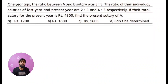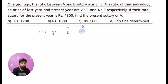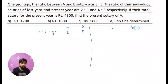This is one of the wonderful problems where they are trying to combine three ratios in a very beautiful way. For the last year, the salary of A and B are in the ratio 3:5. We want the present year salary. For this, they have given information for A and B's last year and present year salary.